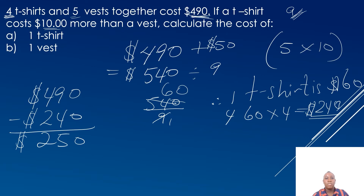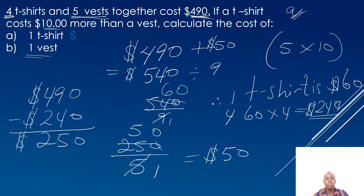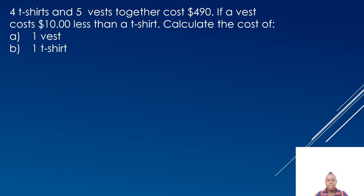What does this $250 represent? This $250 is the balance — it is the cost of five vests. The question asks us to find the cost of one vest. So now that we know the cost of five vests is $250, to find the cost of one vest we divide $250 by five. Five into five is one, five into 25 is five, five into zero is zero. So the cost of one vest is $50. The cost of one t-shirt is $60 and the cost of one vest is $50.